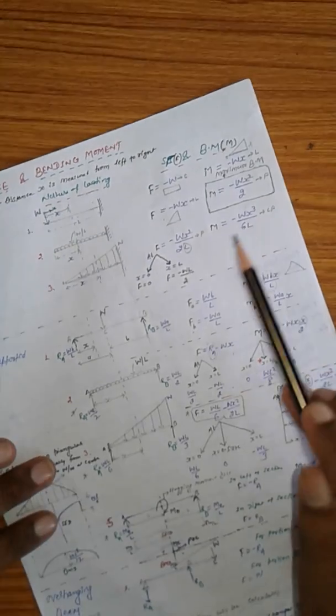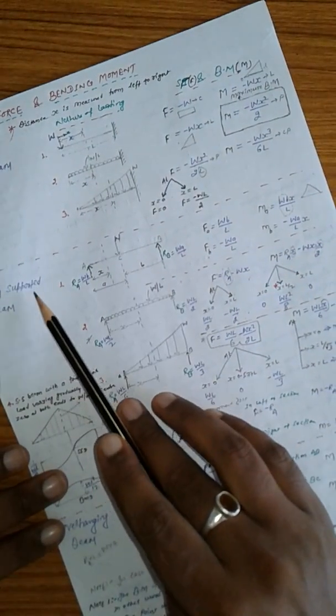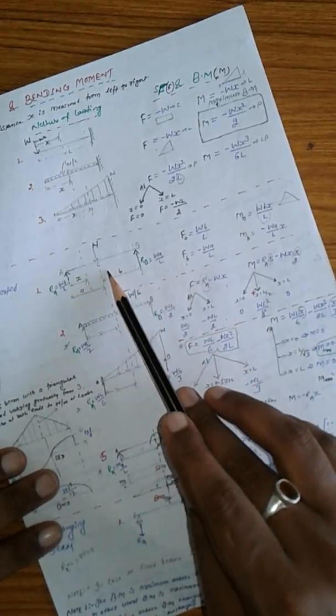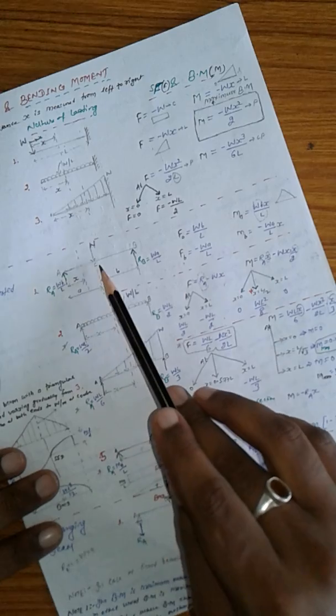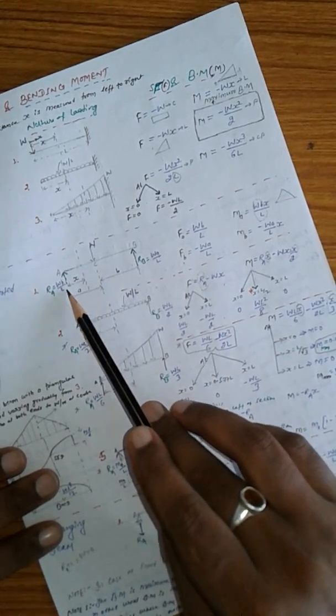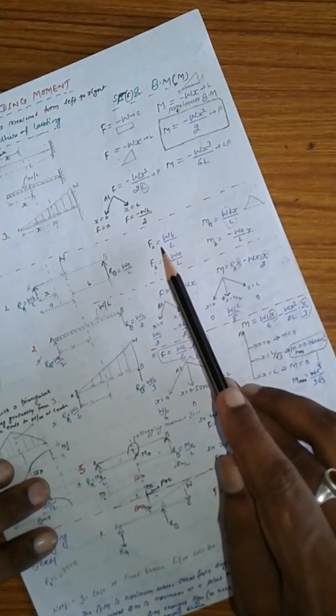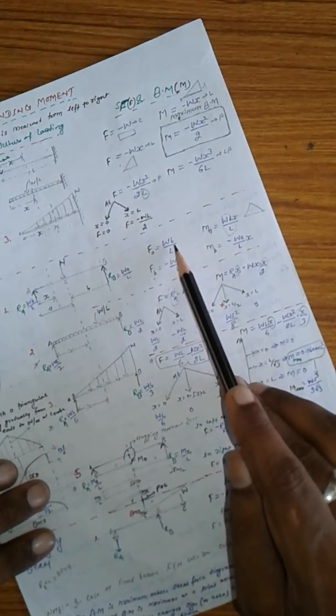Now second is simply supported beam. In simply supported cases, first is point load at the midpoint, at distance a from A and distance b from B. In this case, shear force is wb upon L.